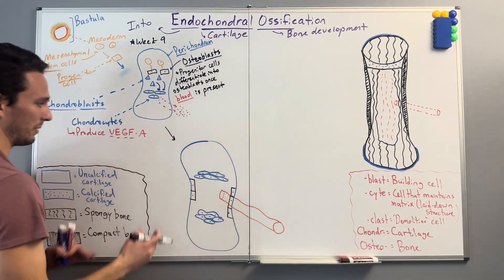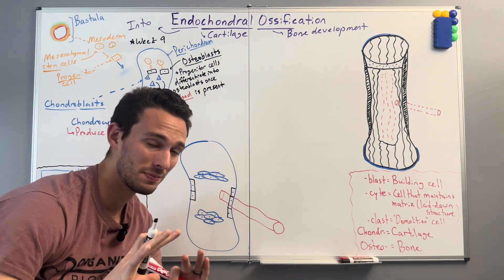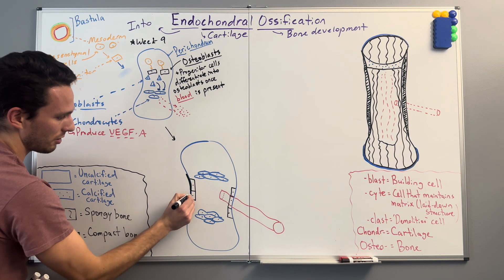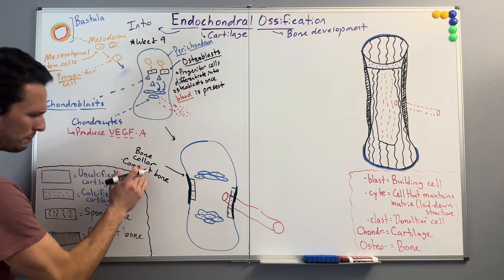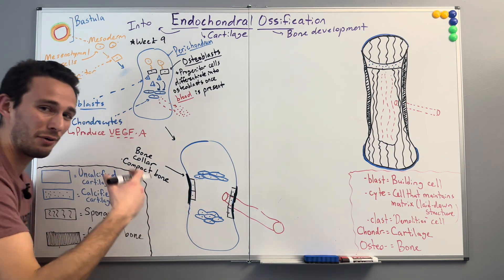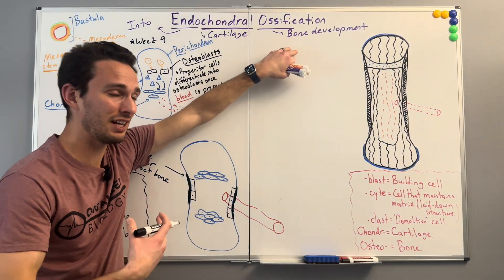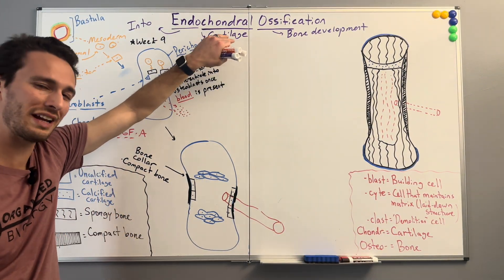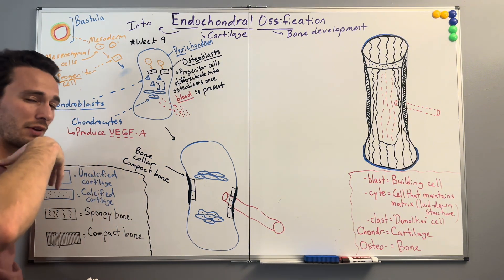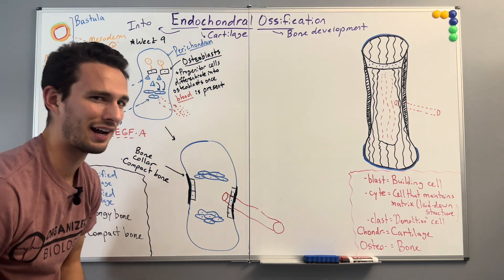Now that we've got that blood supply because of VEGF-A, we differentiated those progenitor cells into our osteoblasts. The first main thing that's going to start happening in terms of bone development is these osteoblasts are going to begin laying down something called a bone collar — and this bone collar is made of compact bone, very dense and protective. The osteoblasts knew how to build that because there was already cartilage laid down. Ossification can only occur when there's cartilage already present.